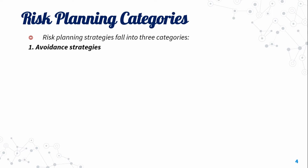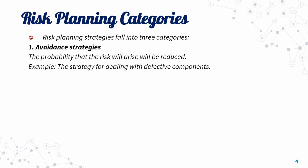The first category is avoidance strategies, where the probability that the risk will arise is reduced. For example, the strategy for dealing with defective components uses avoidance strategies.